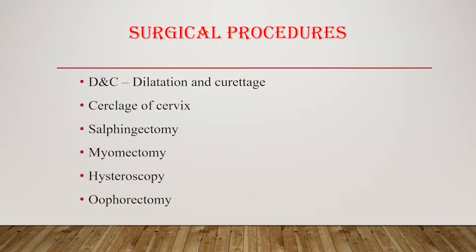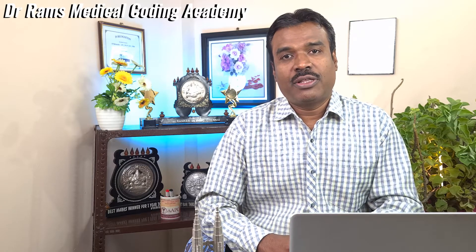Let's move on to the surgical procedures performed in women. First, D&C — dilatation and curettage. D&C is usually performed to treat endometrial hyperplasia in a woman with excessive bleeding, resulting in a thickened endometrium, or as a treatment for abortion. A curette is employed and the endometrial tissue is removed. There is another approach called dilatation and evacuation. Hysteroscopy is the endoscopic visualization of the uterus. Oophorectomy refers to the partial or complete removal of the ovaries.